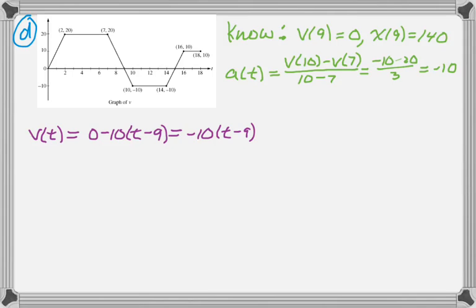To get X of T, what I'm going to do is, I'm going to integrate this, and I know that at T equals 9, the position is 140. So, X of T is going to be 140, and then minus, I integrated the velocity, so plus 1 times the reciprocal. And I got that, and that was pretty quick.